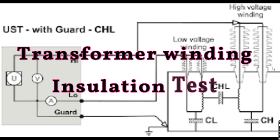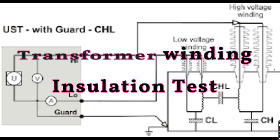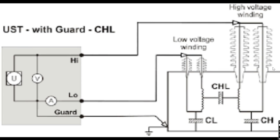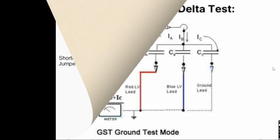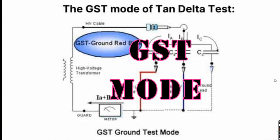This USTG mode of testing is also used in the case of transformers for finding out the value of insulation between two different windings. This is the schematic diagram of a three-phase two-winding transformer for carrying out tan delta testing to find out the insulation between the windings of the transformer.